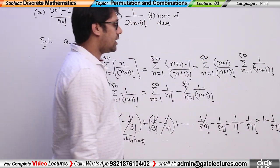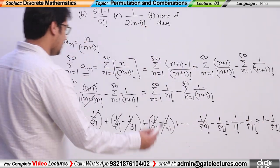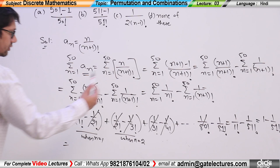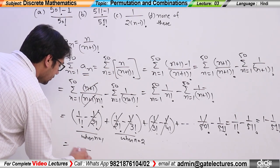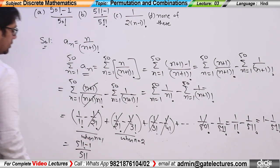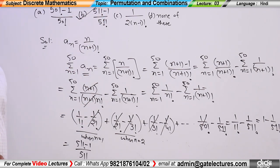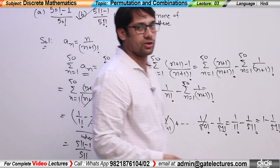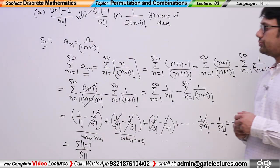Now, taking LCM of 51! in the denominator: the result is (51! − 1) / 51!. Matching with the options, this corresponds to option B: (51! − 1) / 51!. I hope this question is clear. Let's move to the next question.